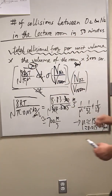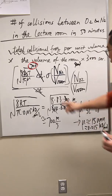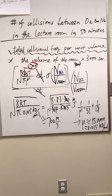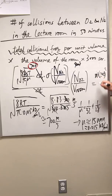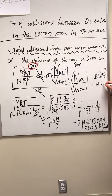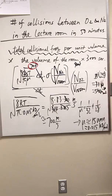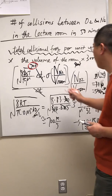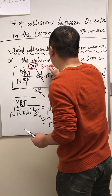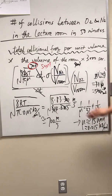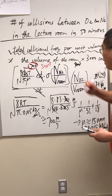For the collisional cross-sectional area sigma: sigma = pi times (R_O2 + R_N2)^2 = pi times (2 + 2 Angstroms)^2 = pi times 16 times 10^{-20} m^2, which is roughly 50 times 10^{-20} m^2, or about 5 times 10^{-19} m^2.